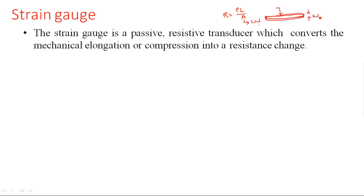This conducting wire has a property — whenever we apply some pressure on it, the width may decrease because of compression. When we apply high pressure, the width of the conducting wire reduces. When the width decreases, the area decreases, and when the area decreases, the resistance value increases.